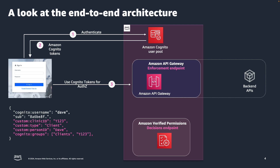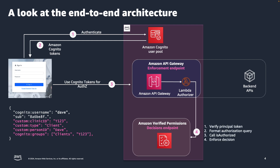The browser sends the tokens to the API Gateway. API Gateway here serves as the policy enforcement point — it stops the request and executes a custom Lambda authorizer. The authorizer performs the is-authorized call to Verified Permissions for a policy decision. Amazon Verified Permissions responds with an allow or deny decision. In this instance, the decision was allowed, so the request proceeds to the backend API. There are many variations to this architecture to meet different application requirements, such as integrating is-authorized calls into the application itself or running an authorization container sidecar.